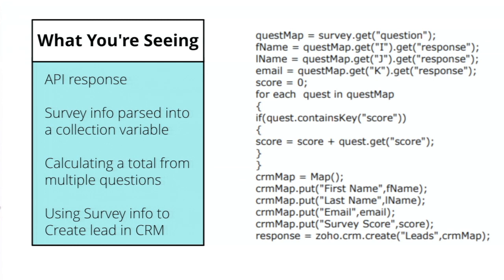Once we have that score in a field in CRM, we could use it to create a view that says people with a score of X — put them in this view, or arrange those scores in numerical order to say who had the best score first. There are all sorts of different things we can do to prioritize the responses, instead of having to go in and read every single survey before we actually respond. That's a nifty example from Survey.